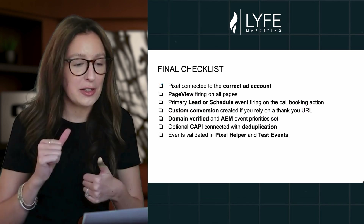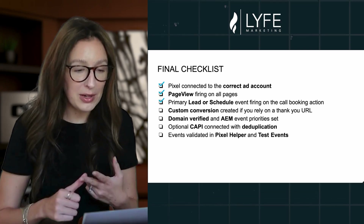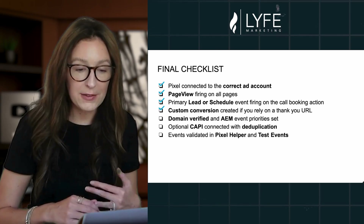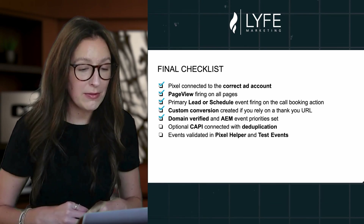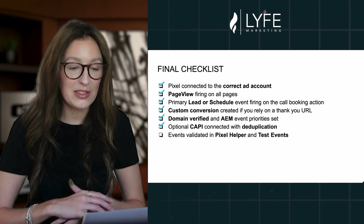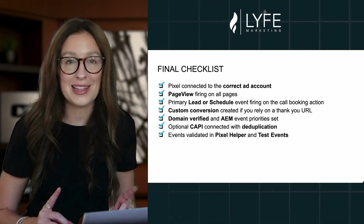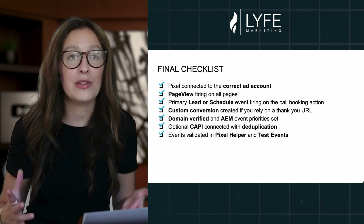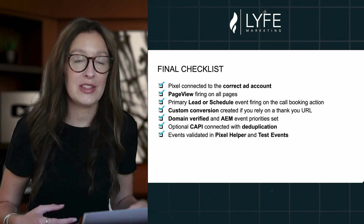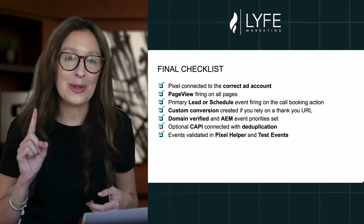So the final checklist: your pixel is connected to the correct ad account, the page view pixel is firing on all pages, your primary lead or schedule event is firing on the call booking action, custom conversions are created if you rely on a thank-you URL, your domain is verified and AEM event priorities are set, your optional Conversions API is connected with deduplication, and the events are all validated in Pixel Helper and Test Events. Once these boxes are checked, Meta can actually learn who your best prospects are, your reporting will show real cost per lead, cost per purchase, or cost per booked appointment — whatever you're tracking — and your optimization will get smarter every week.